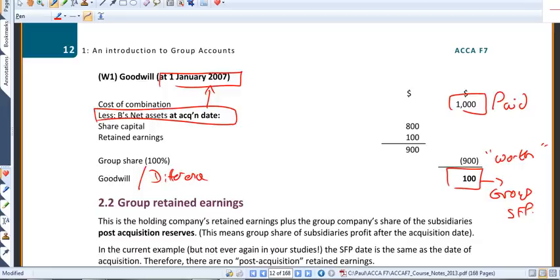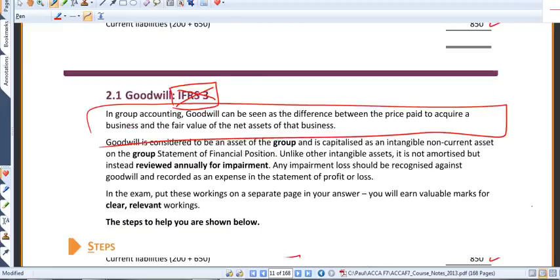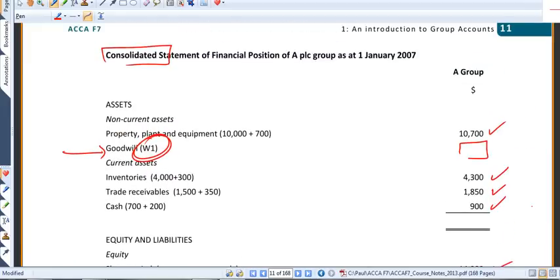We are going to see it primarily in group accounts. And I want you to think of it as a group asset. And it's that 100 which appears in our consolidated accounts. I'm going to put it in there, 100, notice, cross-referenced to working one. Very good habit to get into that, cross-referencing.